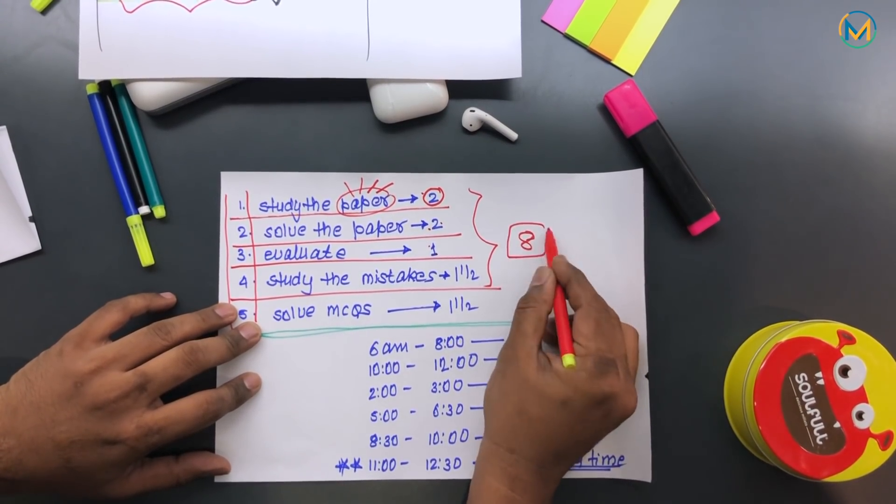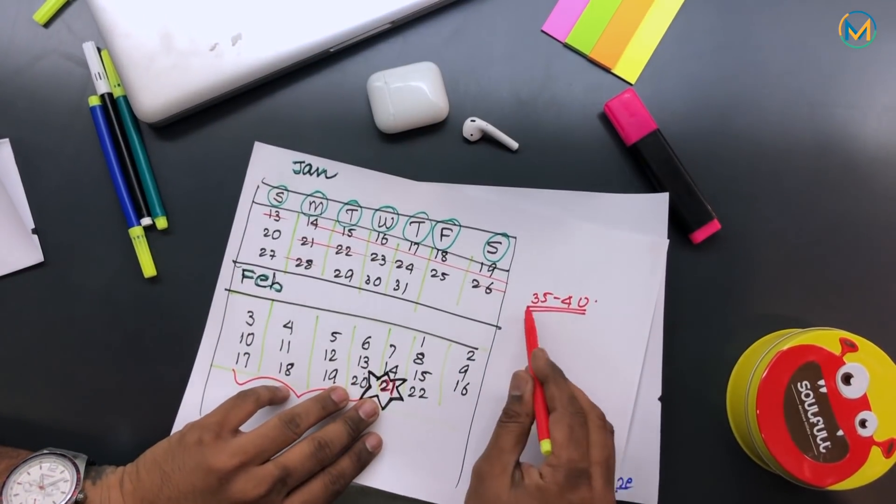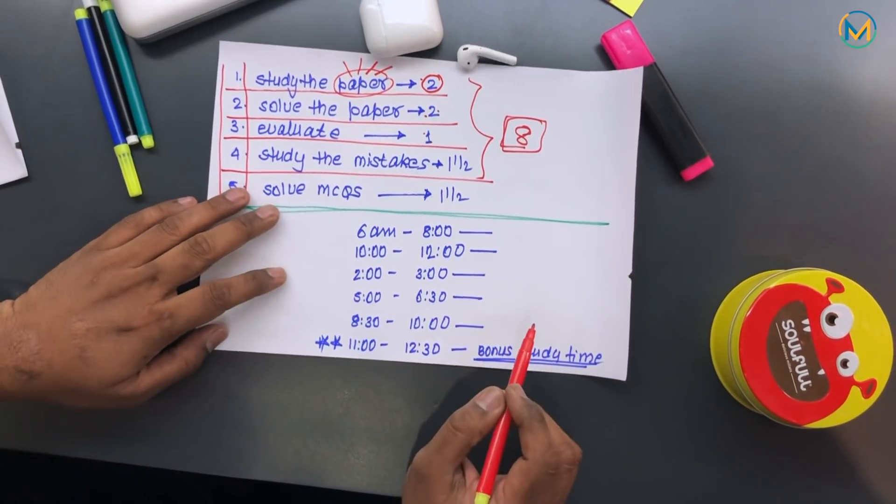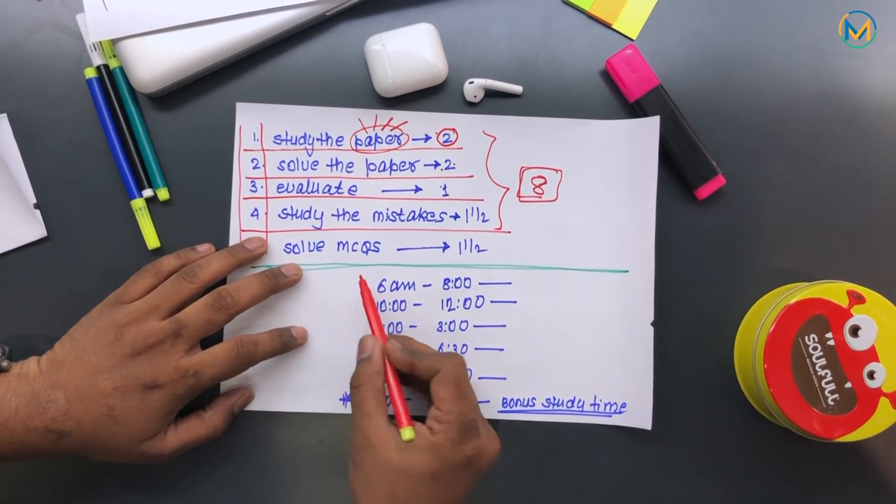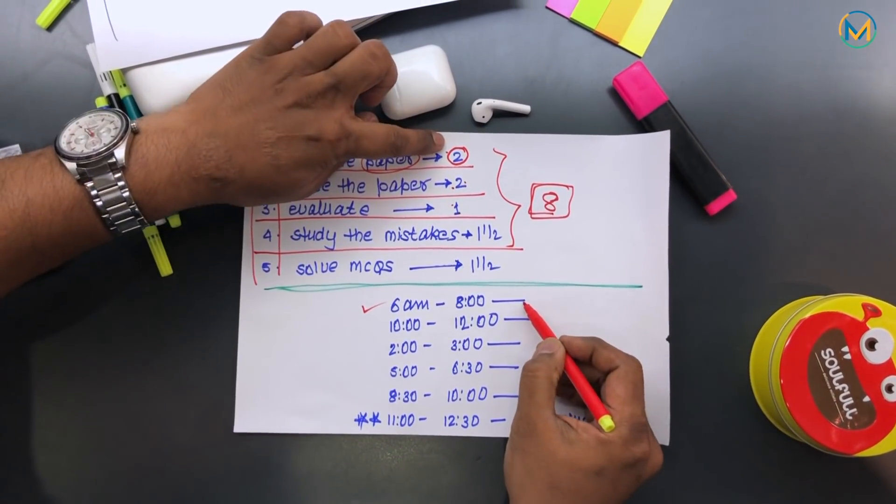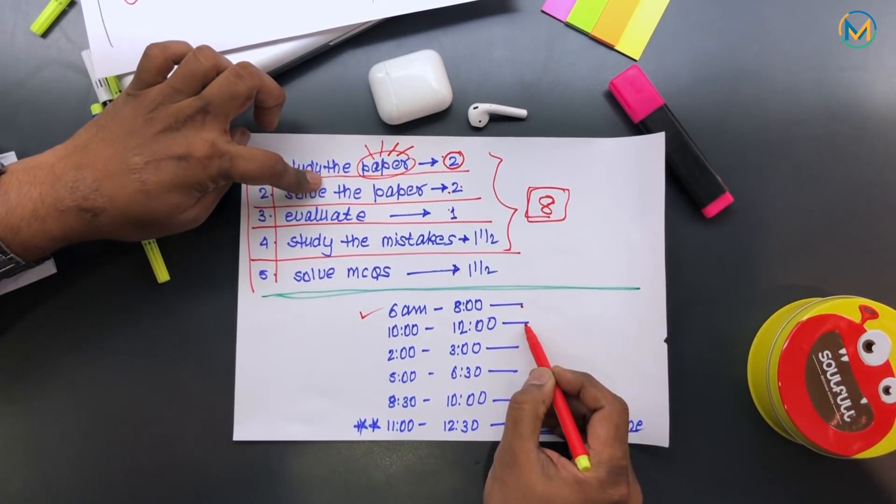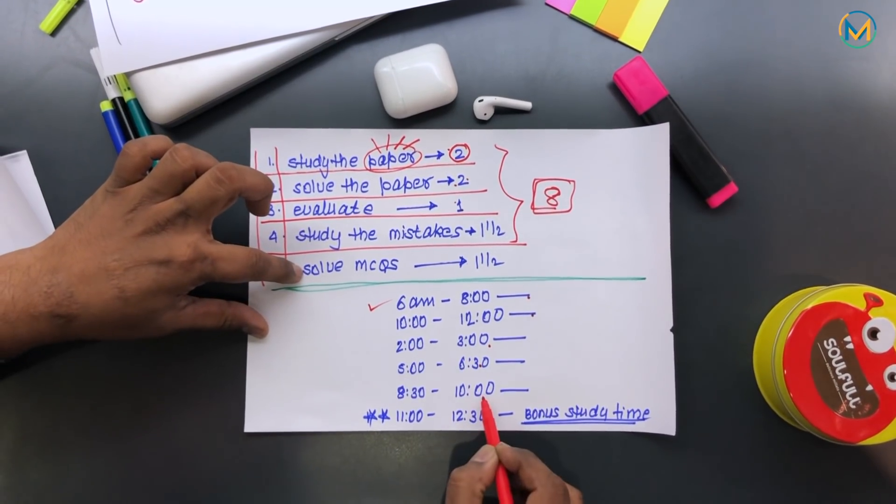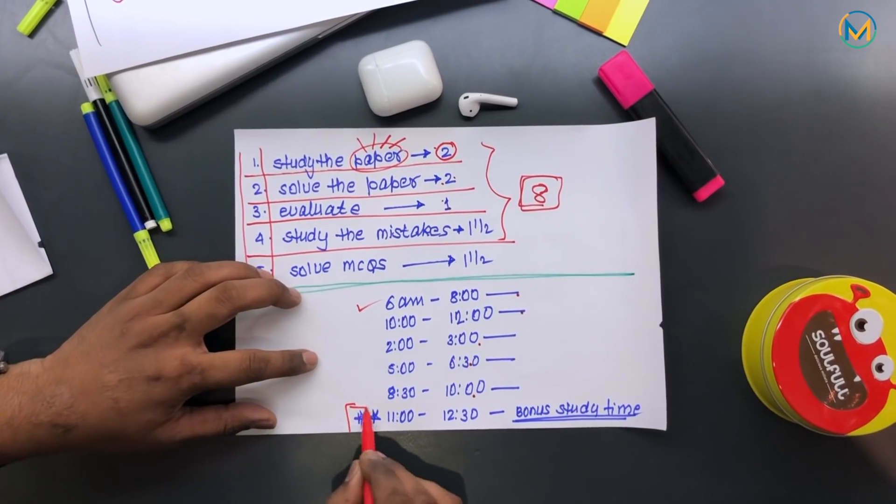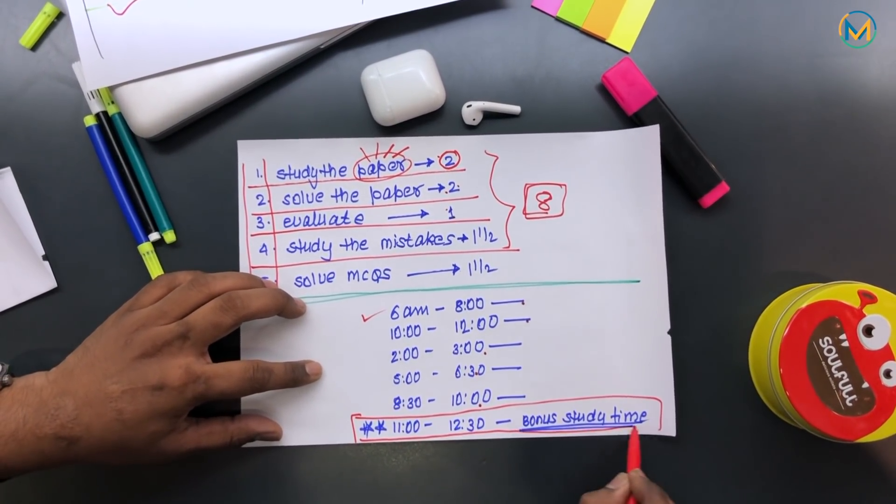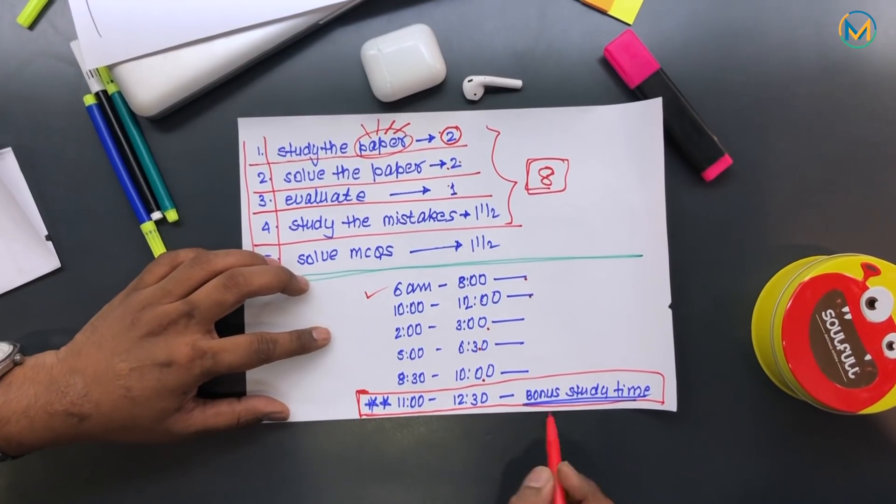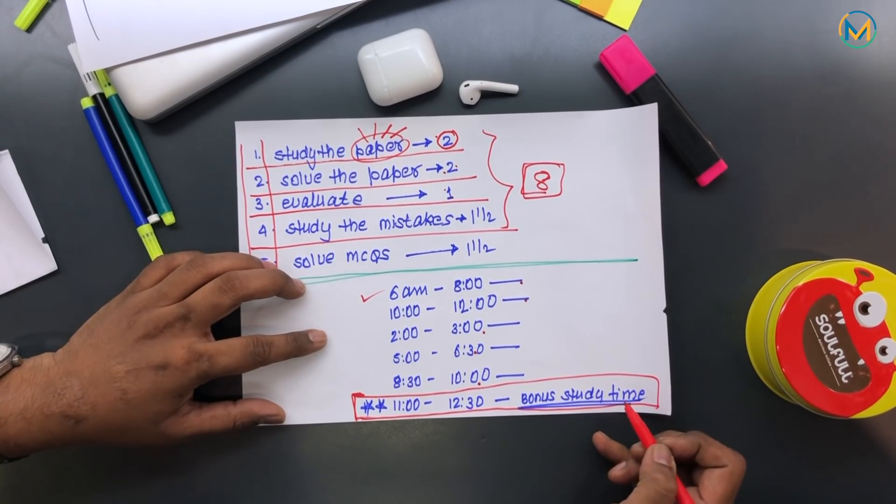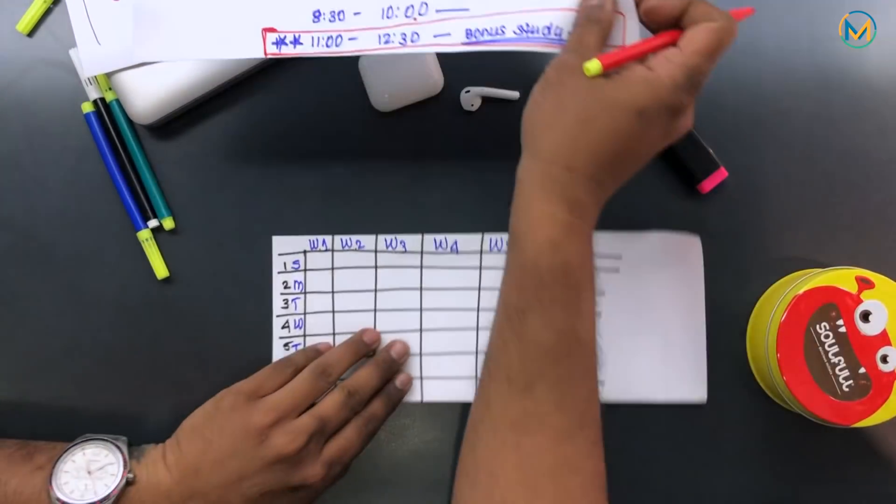A tentative schedule of how you should be doing it: I invite you to wake up before six. You put in two hours here, and then you put in two hours and you solve that paper. You evaluate that paper for an hour over here. You study the mistakes, and after you study the mistakes, you solve the MCQs. If you go to see, you still have an additional day. If you have the stamina, if you have the courage, if you want to do things differently, you can use this as your bonus time, 11 to 12:30. Use it as your bonus study time.